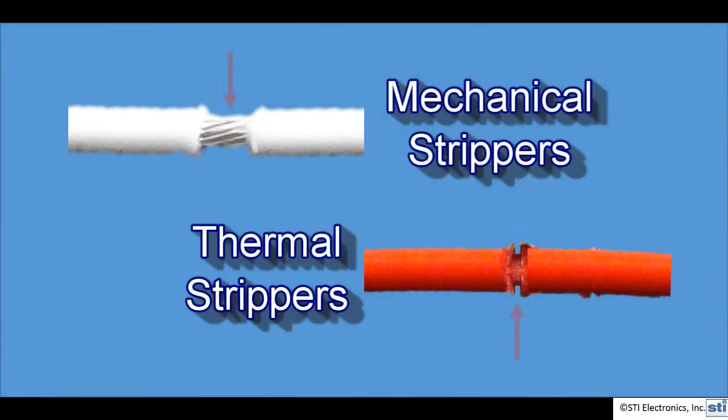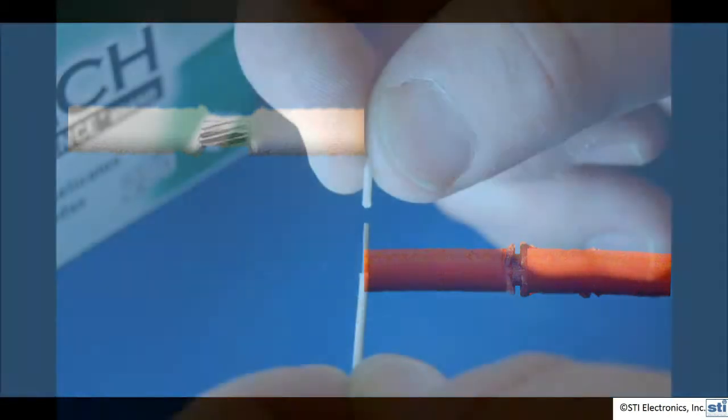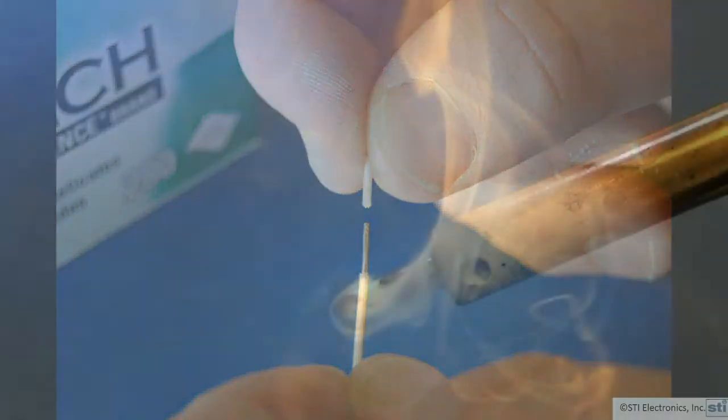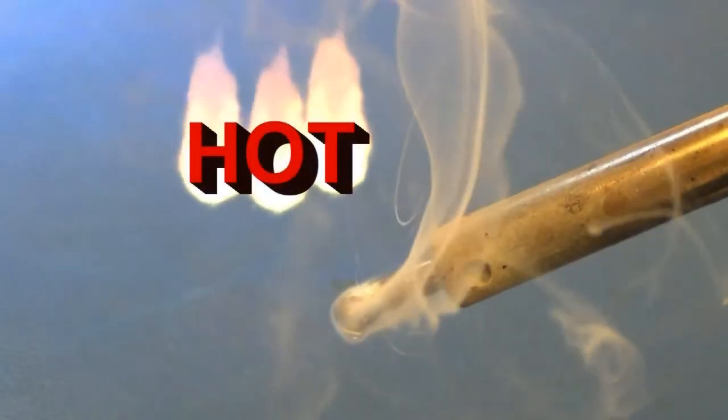Here is a close-up view of both a mechanically stripped and thermally stripped wire to make it easier to see the differences. This completes Hot Tips number 5. Please stay tuned to YouTube, Facebook, and LinkedIn for the next exciting Hot Tips.